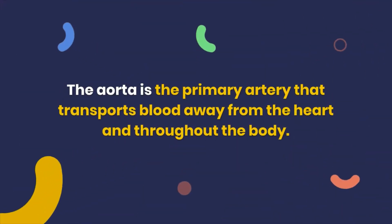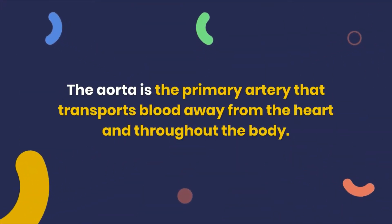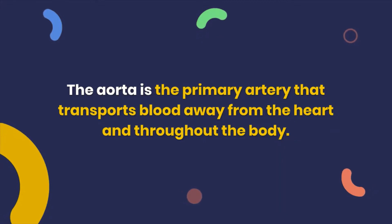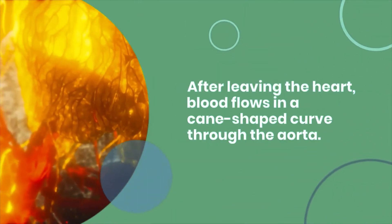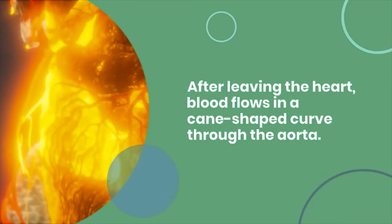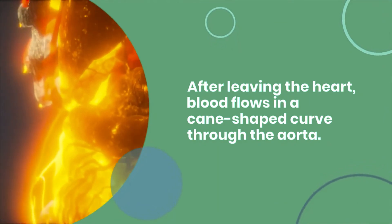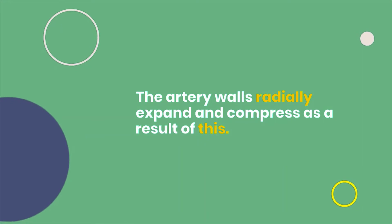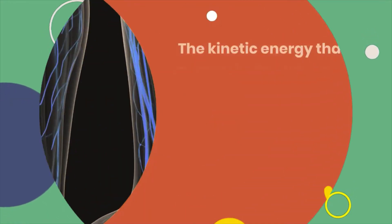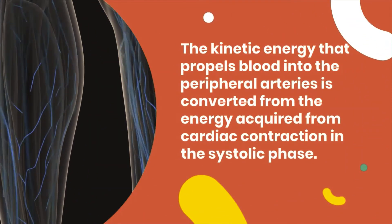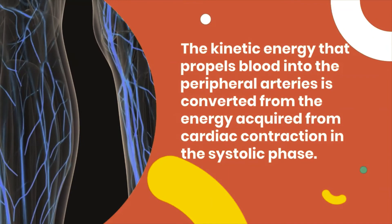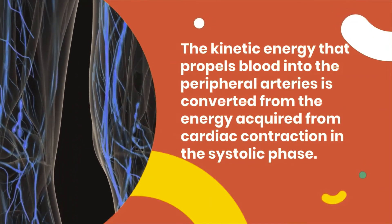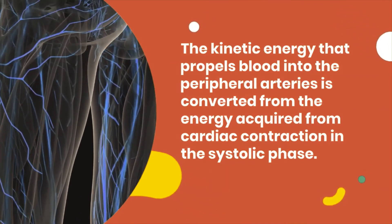Let's have a look at the aorta's functions. The aorta is the primary artery that transports blood away from the heart and throughout the body. After leaving the heart, blood flows in a cane-shaped curve through the aorta. The artery walls radially expand and compress as a result of this. The kinetic energy is converted from the energy acquired from cardiac contraction in the systolic phase.